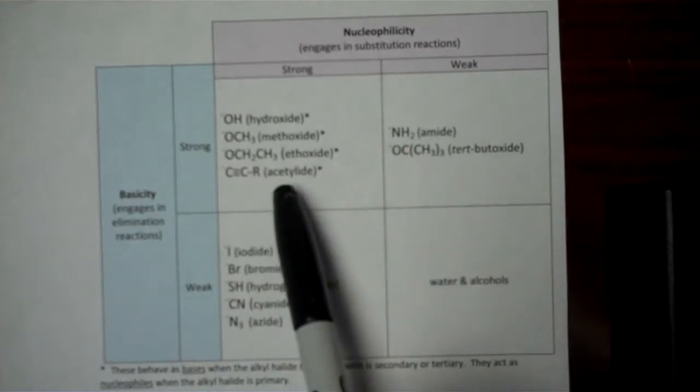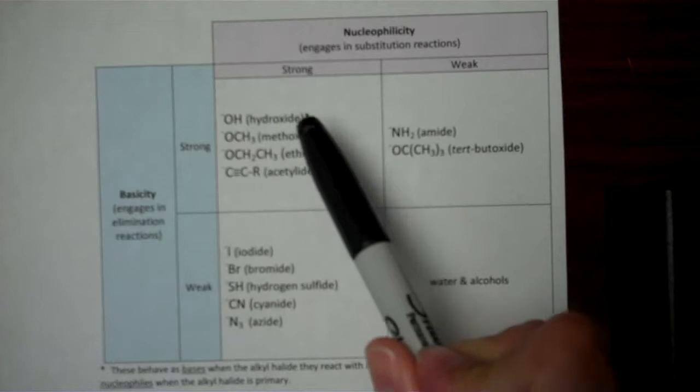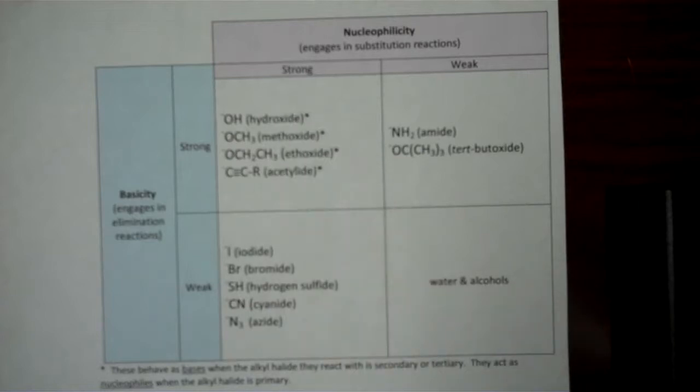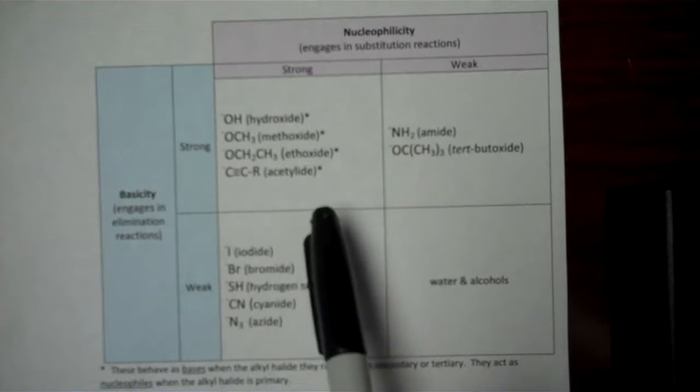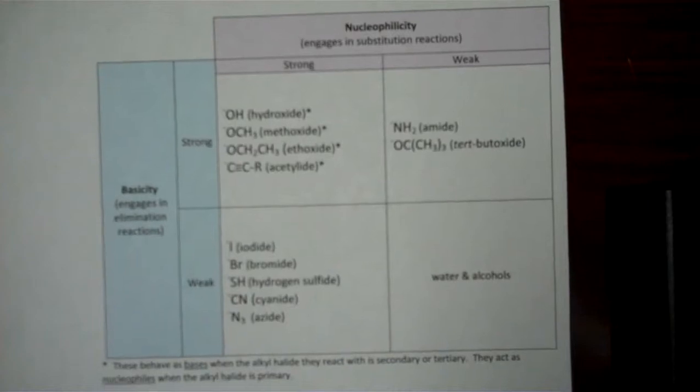This one called acetylide, we're going to see that in chapter 9. That is all about carbon-carbon triple bonds. These are strong nucleophiles that undergo substitution, but we also have to be careful that they don't undergo elimination reactions.